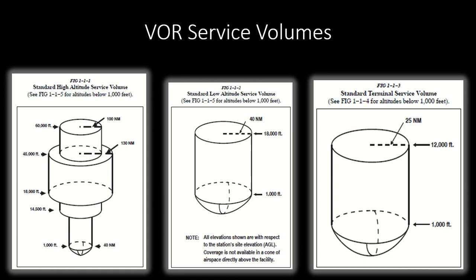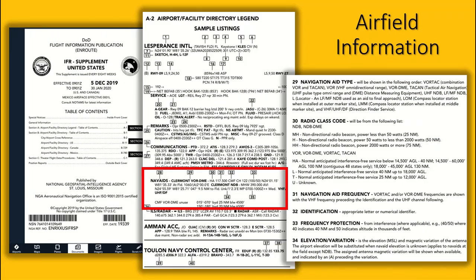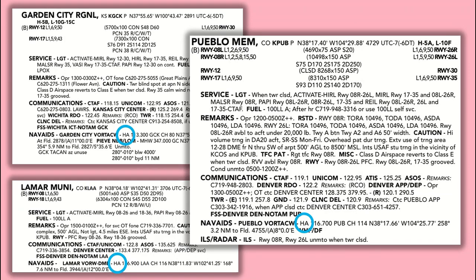As described in the AIM, there are three types of VORs: high, low, and terminal. To determine the VOR type, consult the IFR supplement — as seen in the legend, box 30 is what you are looking for. Most VORs in the United States are high service volume VORs, but it's always a good practice to look it up rather than assume.